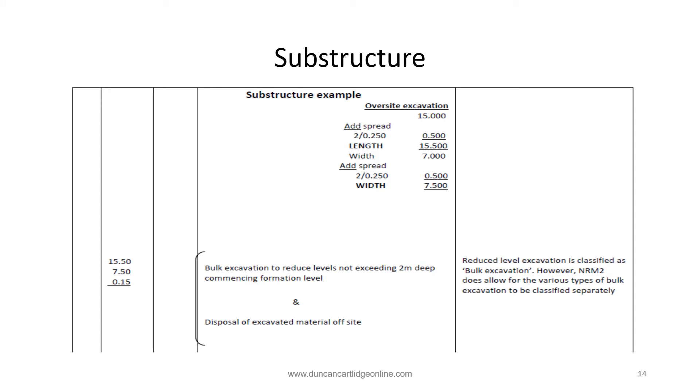So here we go with the worked example. In this case we're using traditional setting out. In other presentations spreadsheet applications are used. It may be a good idea to print off the drawing on page 11. To the external dimensions of the walls we add twice times 250 millimeters to give the overall footprint of the excavation 15.5 by 7.5. The reduced level excavation is 150 millimeters deep. Note as previously mentioned the excavated material has been removed from site.